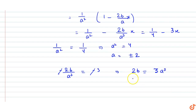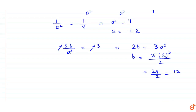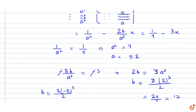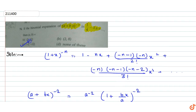तो यहाँ से b की value: अगर a = +2 लेते हैं तो b = 3×(2)³/2 = 24/2 = 12. और अगर a = -2 लेते हैं तो b = 3×(-2)³/2 = 3×(-8)/2 = -12. तो दो possible values हैं: (a=2, b=12) और (a=-2, b=-12). देखते हैं कौन सा option match होता है — here option C will be the correct option. This is the answer for this question.